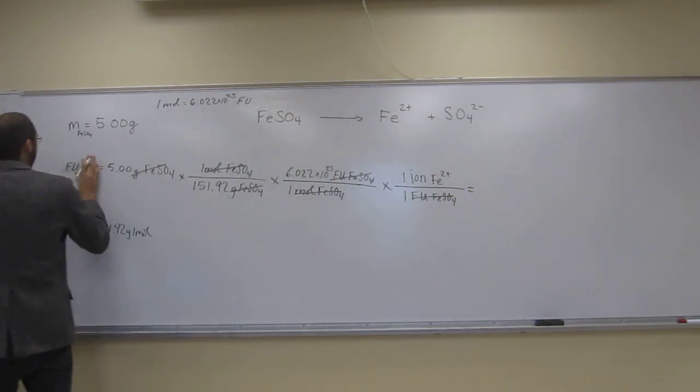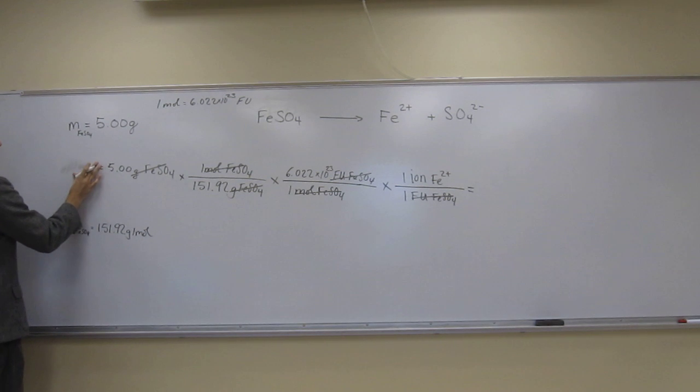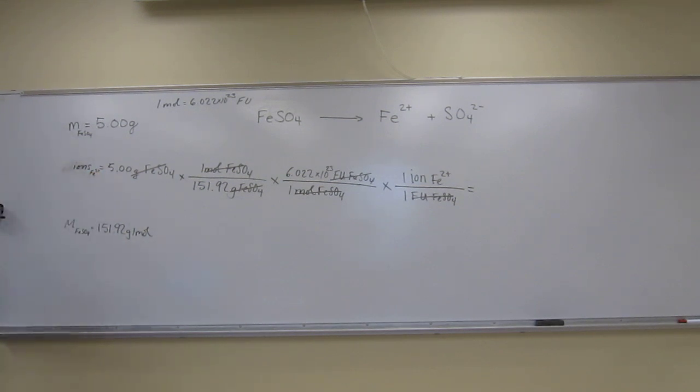So we're not looking for that anymore. We're now looking for the number of ions of iron 2 plus. So now all we've got to do is multiply these things together and divide them. So 5 divided by 151.92 times 6.022 equals...